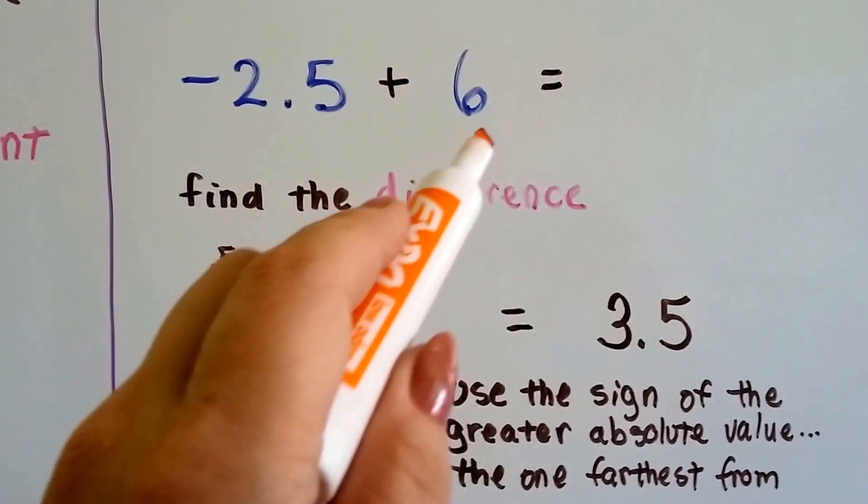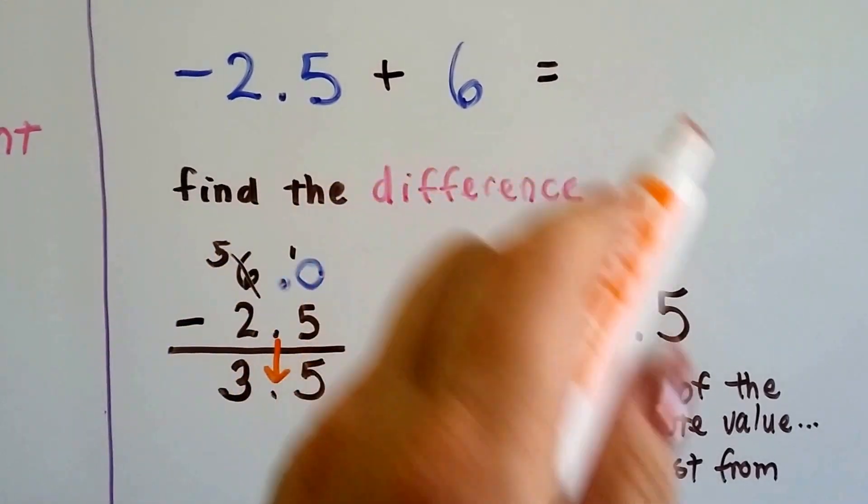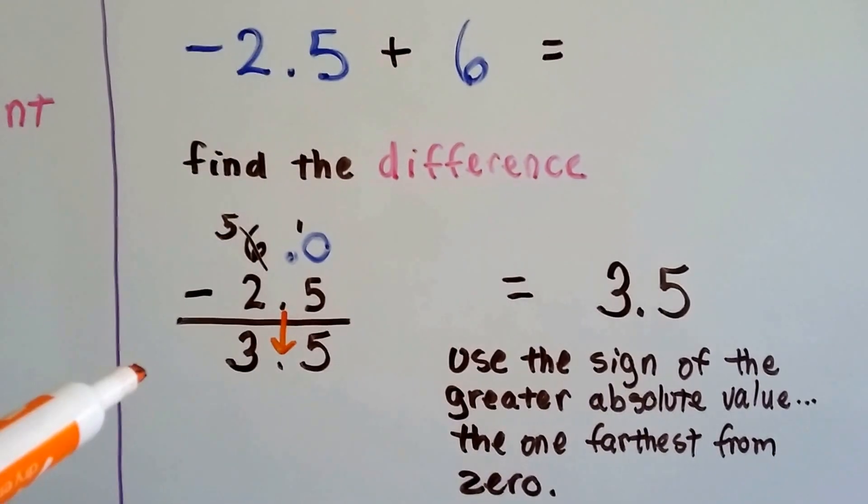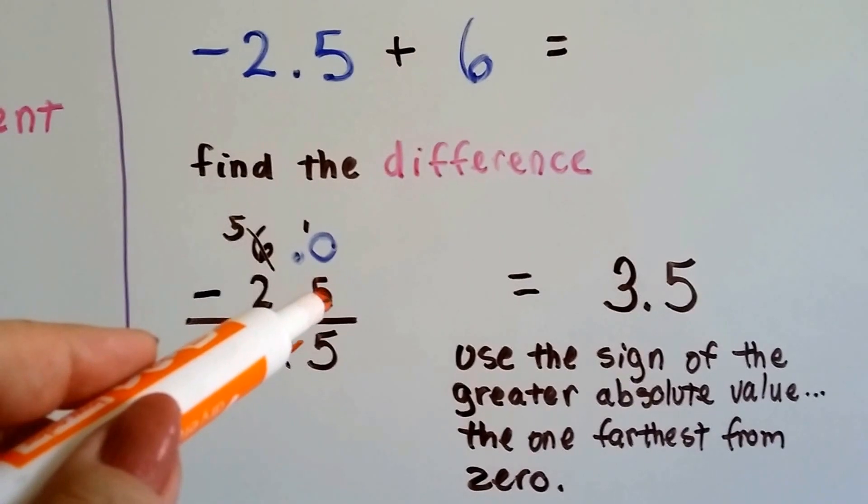See? Because that's where the decimal would have been. It would have been behind the 6 anyway, like 6 point something something, right? Because it's a whole number. So, now we can subtract this, because there's something there. Well, sort of. We can't have zero and take 5 away.